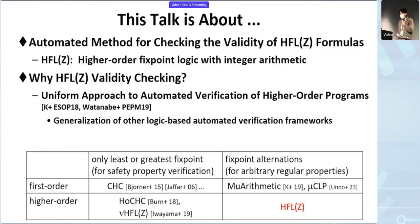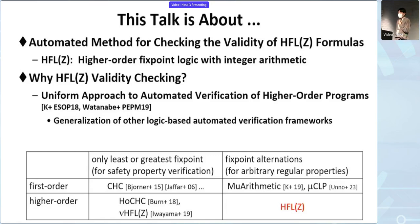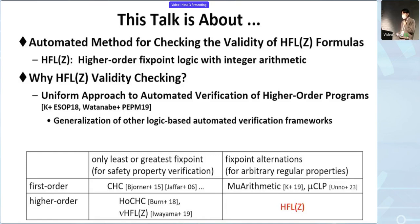Constrained Horn clauses have been used as a common framework for automated verification of first-order programs, and more recently higher-order extensions have also been studied, such as HoCHC and HFG. Plain CHCs can be directly used for verification of safety properties, and if we extend them with a combination of least and greatest fixed-point operators, we can also deal with arbitrary regular temporal properties. HFG is a combination of these two extensions — a higher-order logic suitable for encoding verification problems for higher-order programs, with fixed-point alternations suitable for encoding temporal properties.